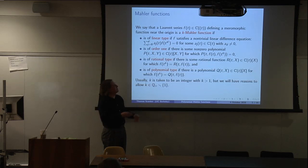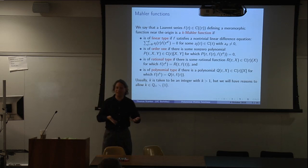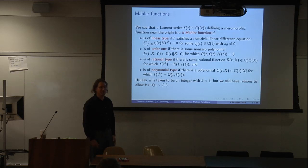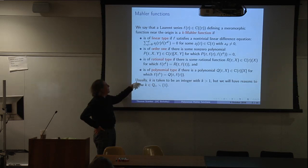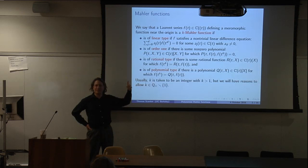You might say it doesn't make sense — the ring of Laurent series is not actually preserved under that substitution if K is fractional. We'll pass to the algebraic closure and work with Puiseux series, and then it makes sense to talk about such a substitution. The reason K is usually taken to be an integer is that most focus, at least in recent years, has been on the linear type equations. For linear type equations involving a reciprocal, you could just replace everything with the inverse of the automorphism and write it with T goes to T to the K.